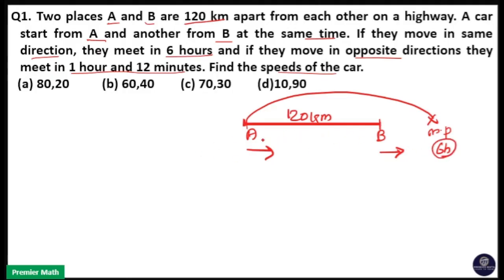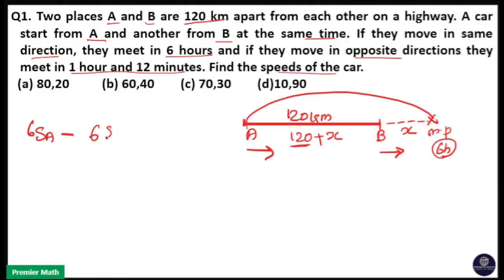The distance travelled by A is equal to 120 plus X, if we take the distance travelled by B as X. So the difference in distance is equal to 120 km. Applying the equation: distance travelled by A equals speed of A into 6 hours; distance travelled by B equals speed of B into 6 hours. So 6·SA minus 6·SB equals 120 km. Cancelling 6, SA minus SB equals 20.